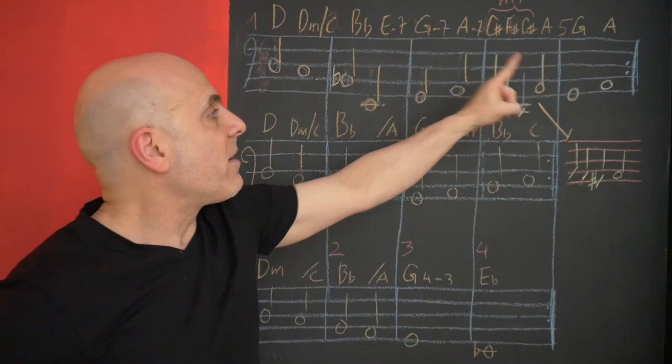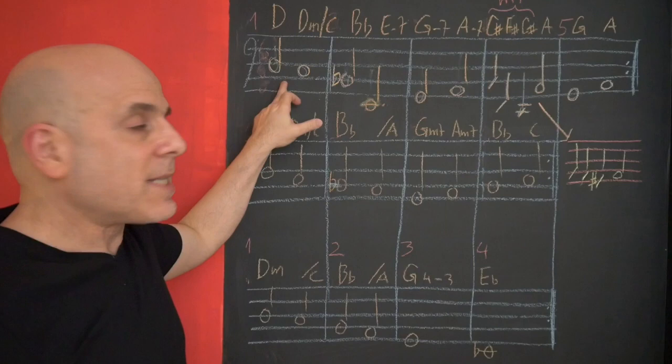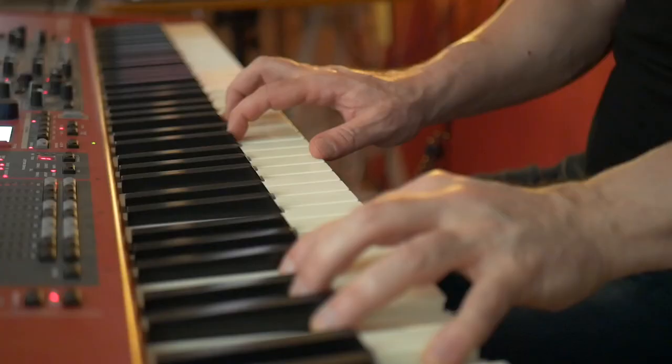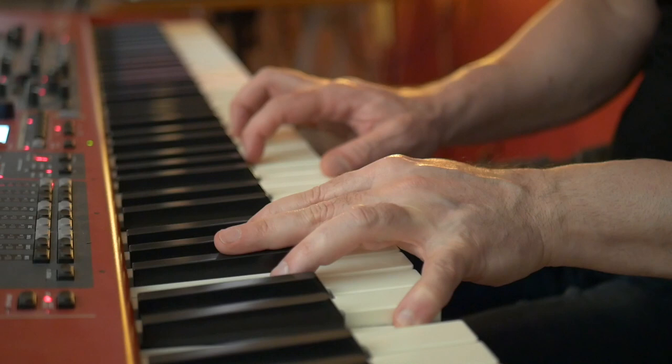We see 5 bars - 1, 2, 3, 4, 5 - and we see that the length of the bars is changing. We got 6 beats here, then 5 here, 4, again 5 and 4.